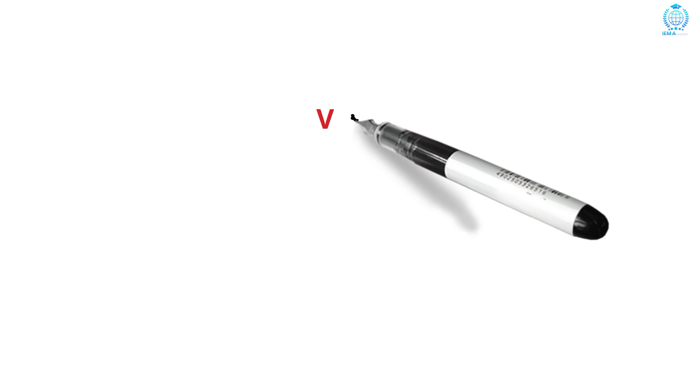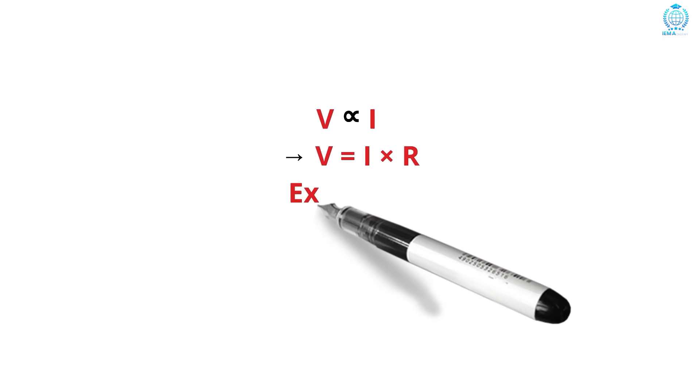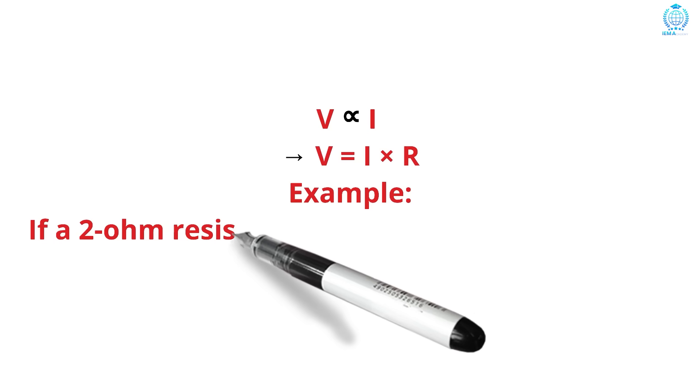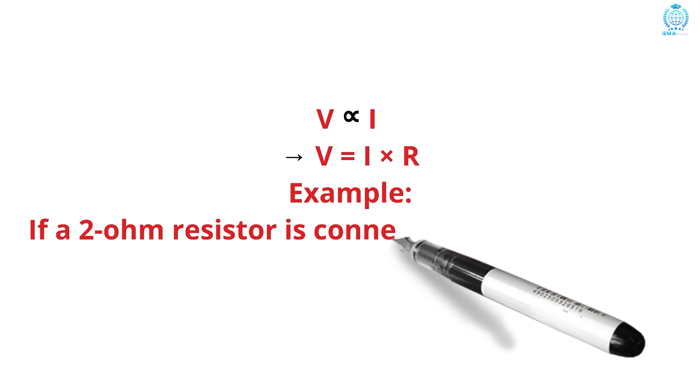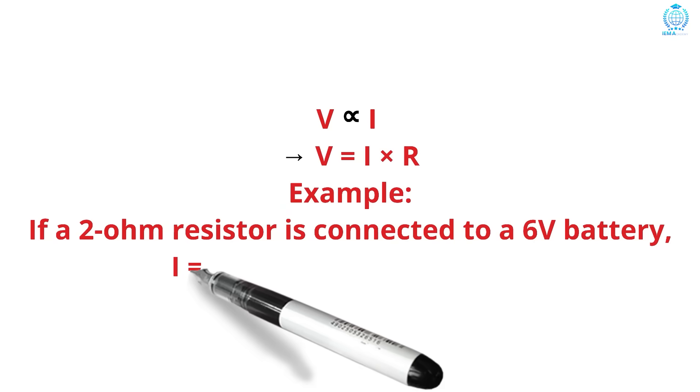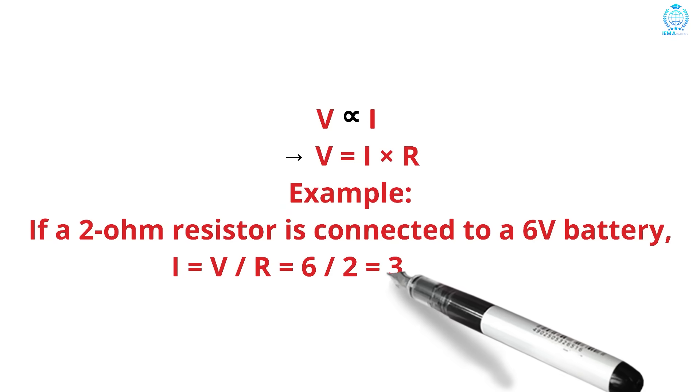This is the heart of current electricity. Let me explain the law to you. At constant temperature, the current through a conductor is directly proportional to the potential difference across it. So, V is directly proportional to I, which means V is equal to I multiplied by R. For example, if a 2 ohm resistor is connected to a 6 volt battery, I is equal to V by R, which equals 6 by 2 equals 3 amperes.